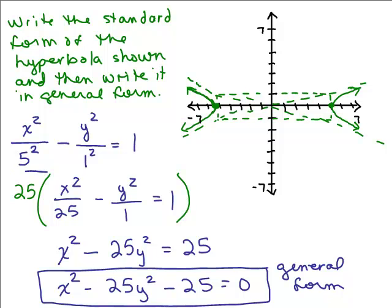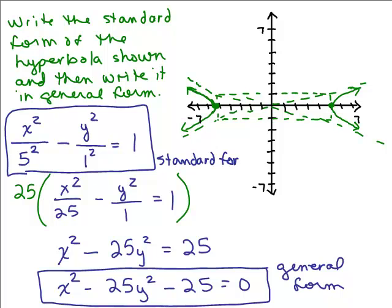This standard form is much easier to graph because it tells us what the X intercepts are. It's easy to figure out what the asymptotes are. By the way, what are the equations of these asymptotes? It's always the Y value over the X value. So it's 1 over 5 will be the slope. Our asymptotes are Y equals plus or minus 1/5 X. The intercepts are 5,0 and negative 5,0.